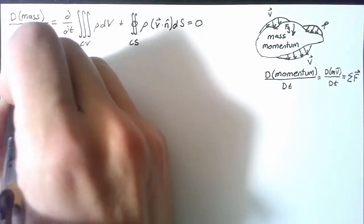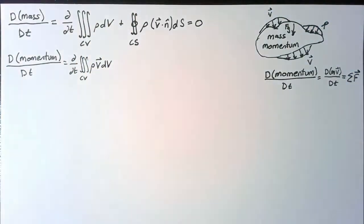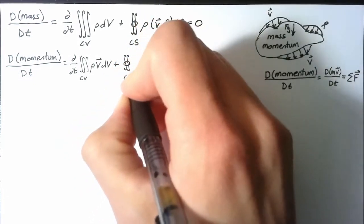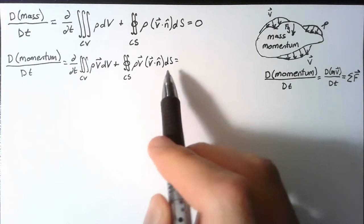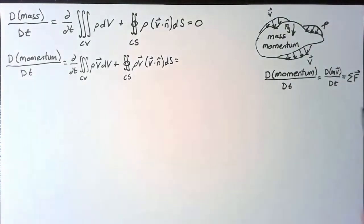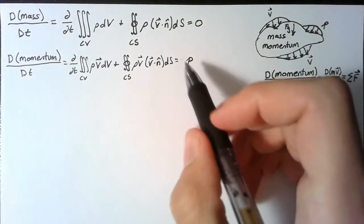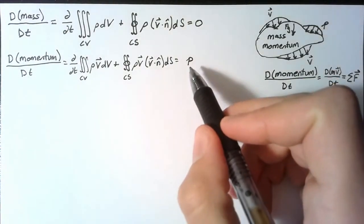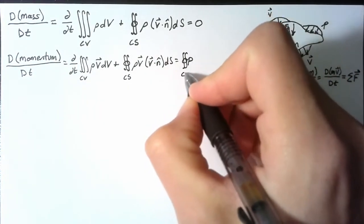So the material derivative of momentum is going to be split into the local time derivative, plus the momentum coming in and the momentum going out. And this is not equal to zero, this is equal to the sum of the forces. So the first force was pressure, but pressure itself is not enough. We know that the force of pressure is caused by pressure over some area.